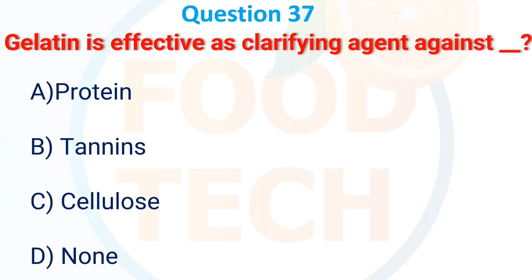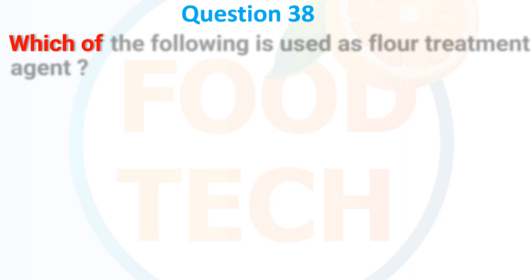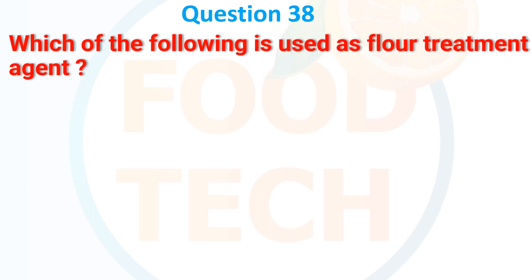Gelatin is effective as a clarifying agent against: A. Protein, B. Tannin, C. Cellulose, D. None. The answer is B. Tannin.